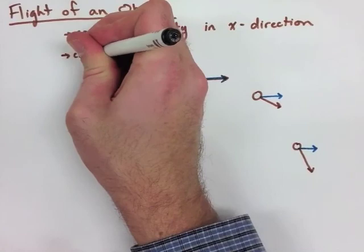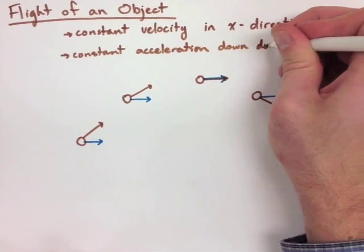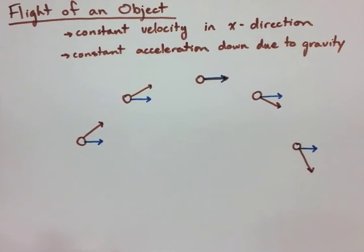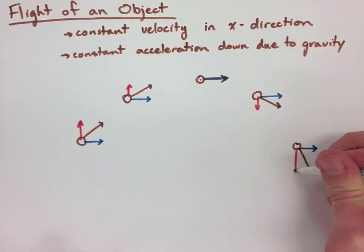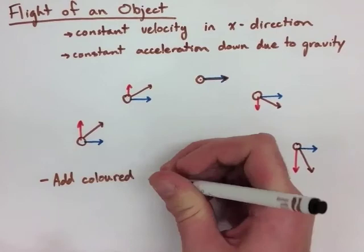Now when we look at the y direction, we have a constant acceleration in the y direction, meaning that the acceleration due to gravity is constantly acting on the object. So we start with our velocity going up, and as we get closer to the top, we get shorter and shorter, then as we go back down, it starts to get longer again.